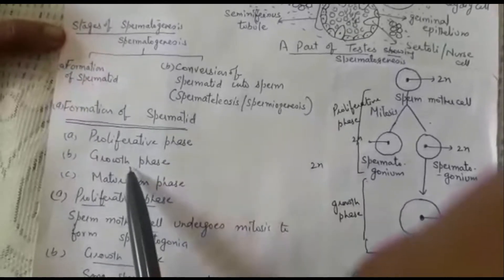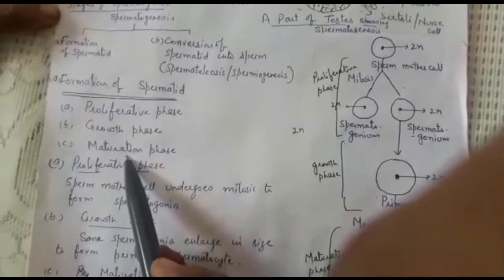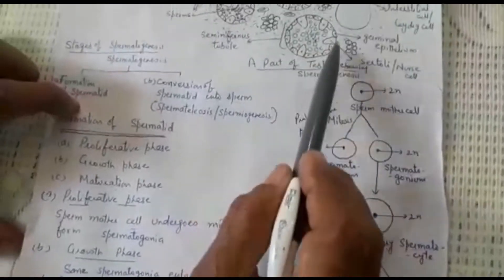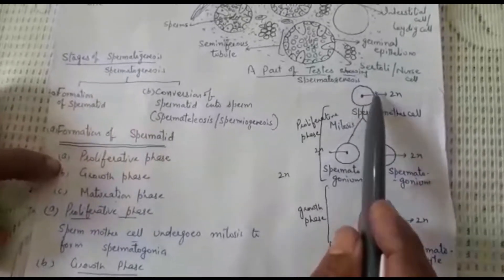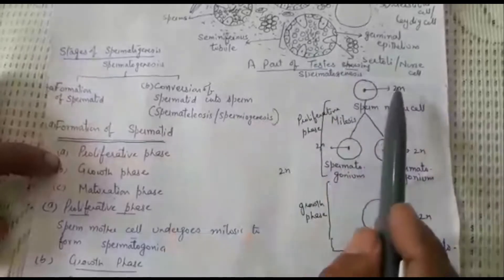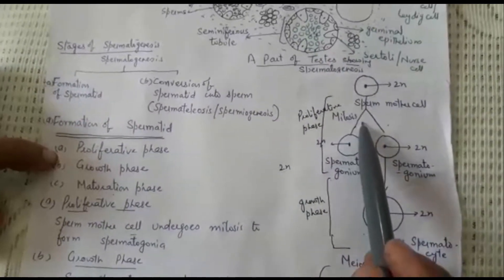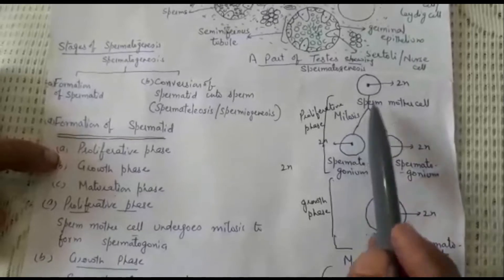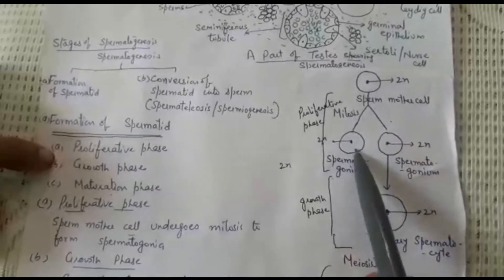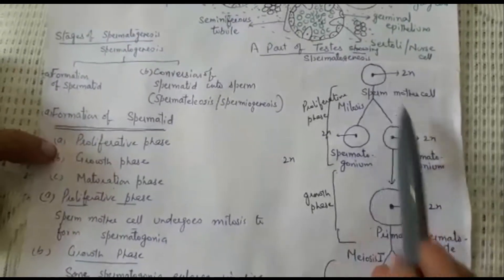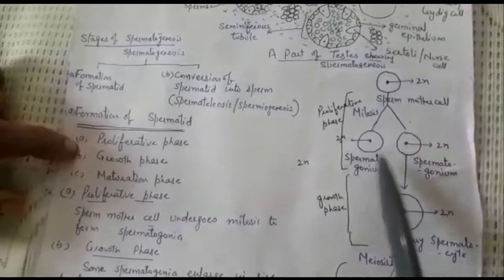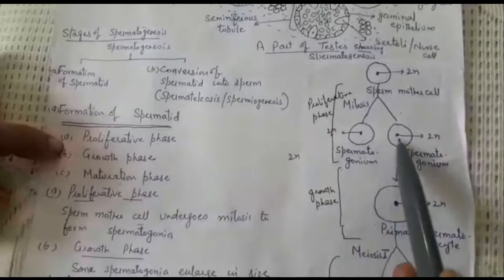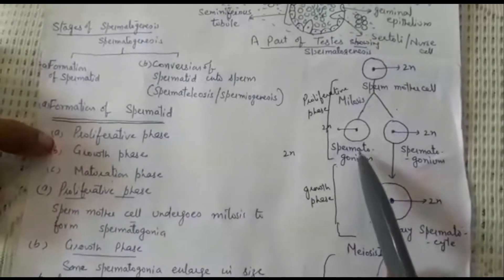The formation of spermatid involves three phases: proliferative phase, growth phase, and maturation phase. In the proliferative phase, the sperm mother cell, which is diploid, undergoes mitosis — a division where the parent cell divides to form two cells having the same chromosome number. This produces cells again diploid, known as spermatogonia.